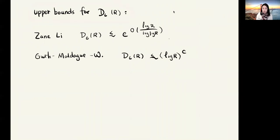There are some upper bounds for the constant d_6(r). After Bourgain-Demeter decoupling, Zane Li used some idea from efficient congruencing and proved that d_6(r) is bounded by e to a constant times log r over log log r. Last year, joint with Guth and Maladague, we showed that d_6(r) is bounded by log r to a constant. This constant c is like 100.